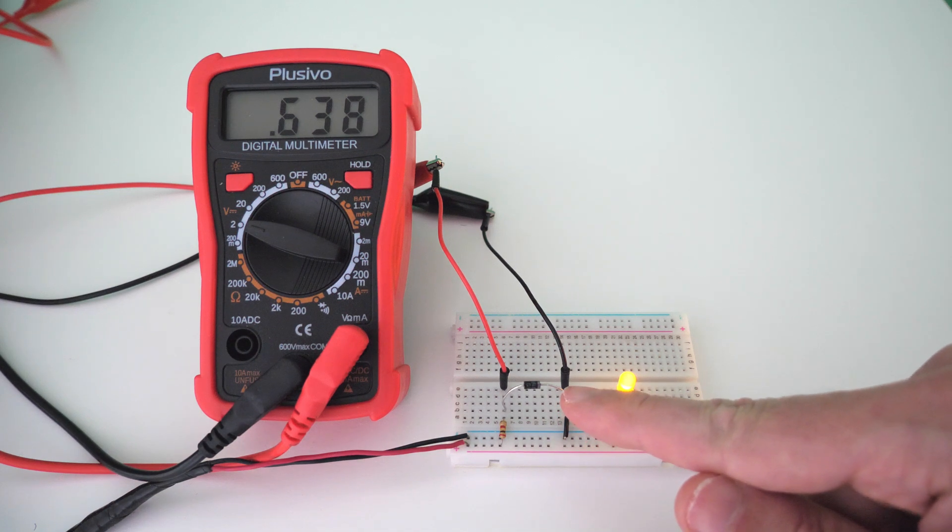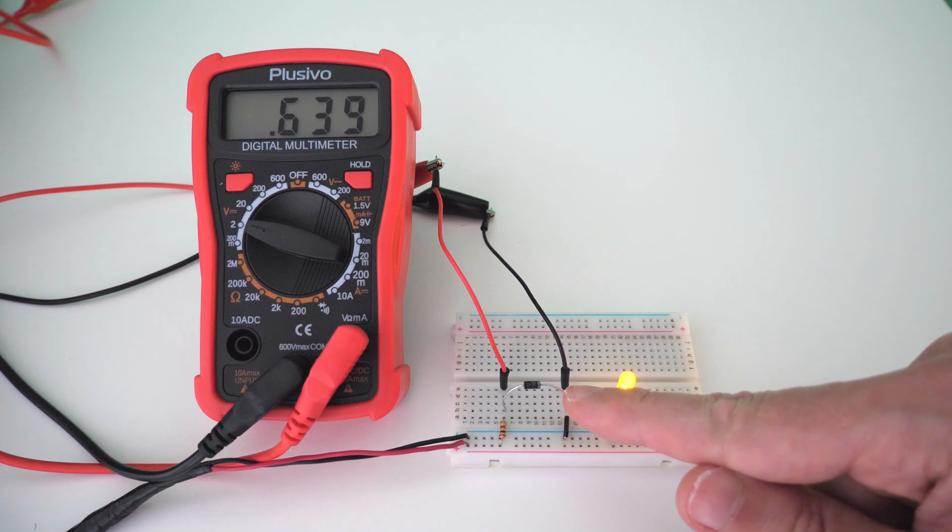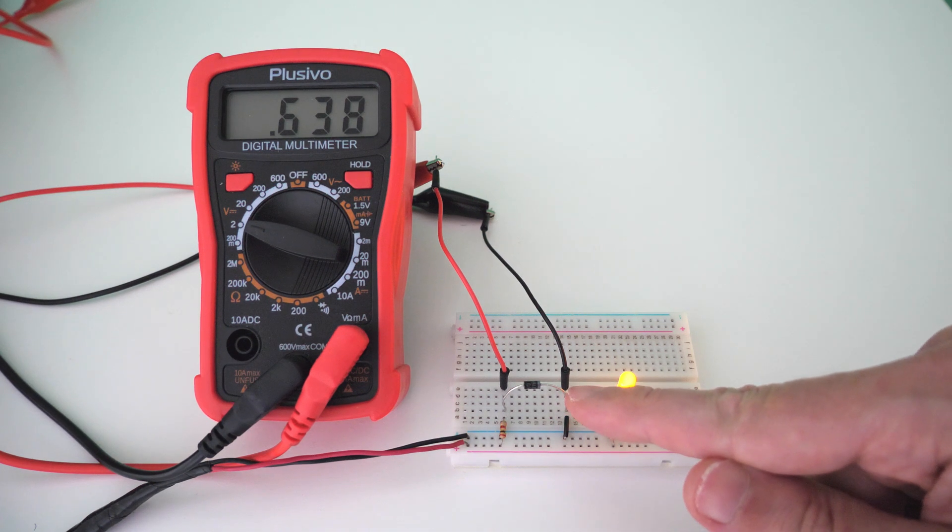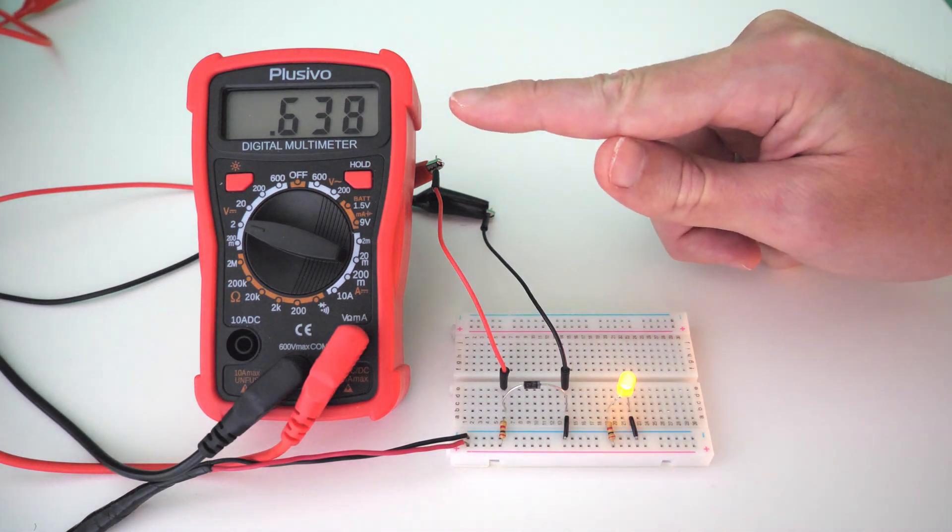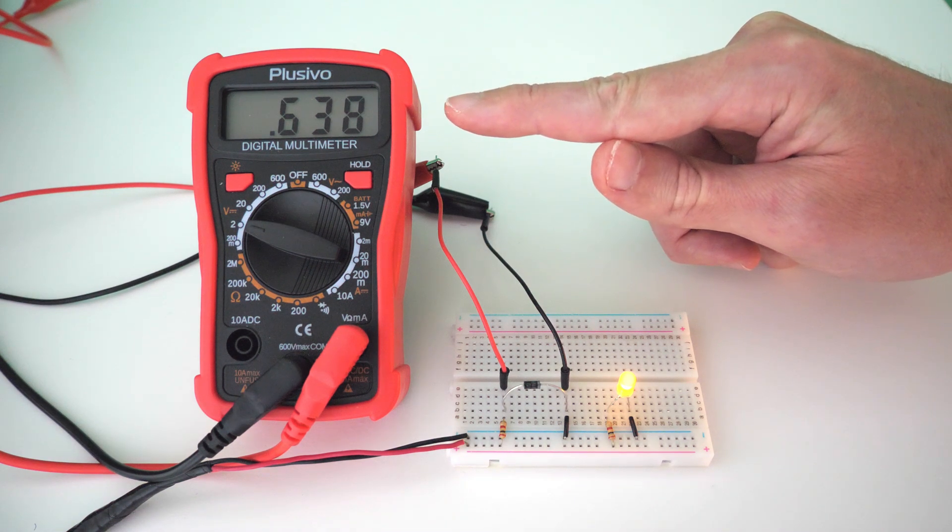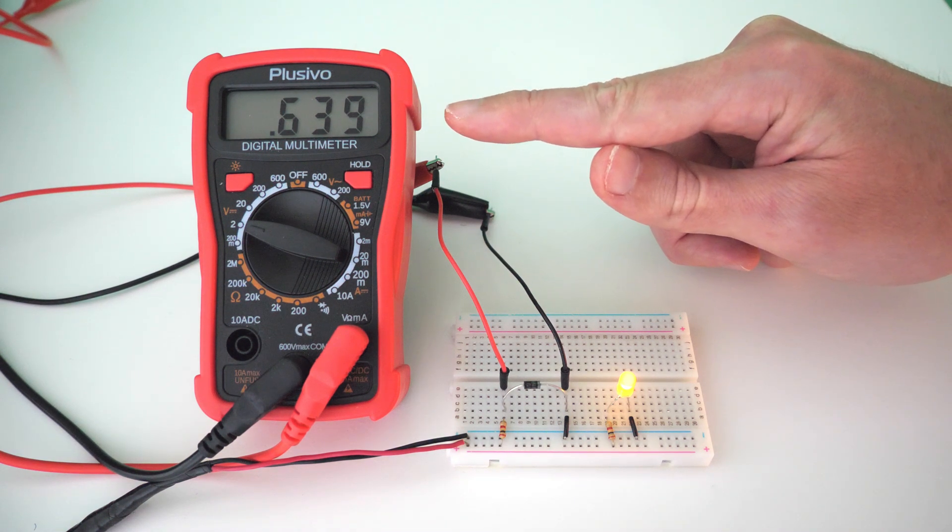Right here we have a diode, and most people know that the voltage drop across the diode is going to be somewhere between 0.6 and 0.7 volts. And if we look at our voltmeter, we can see that the voltage drop is 0.638 volts.